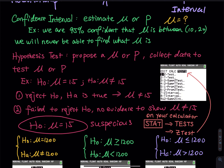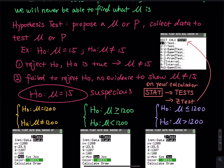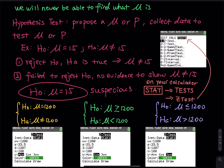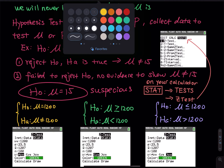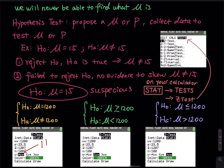I have three hypothesis tests: yellow, green, and purple. For the yellow one, H0 is mu equals to 1200, HA is mu not equal. In the green one, I have greater than or equal to versus less than. And the last one has less than or equal to versus greater than. To perform these tests, you go to STAT on your calculator, then go to TEST, and select a t-test. The only difference between the three screenshots is the sign for HA — not equal, less than, and greater than.